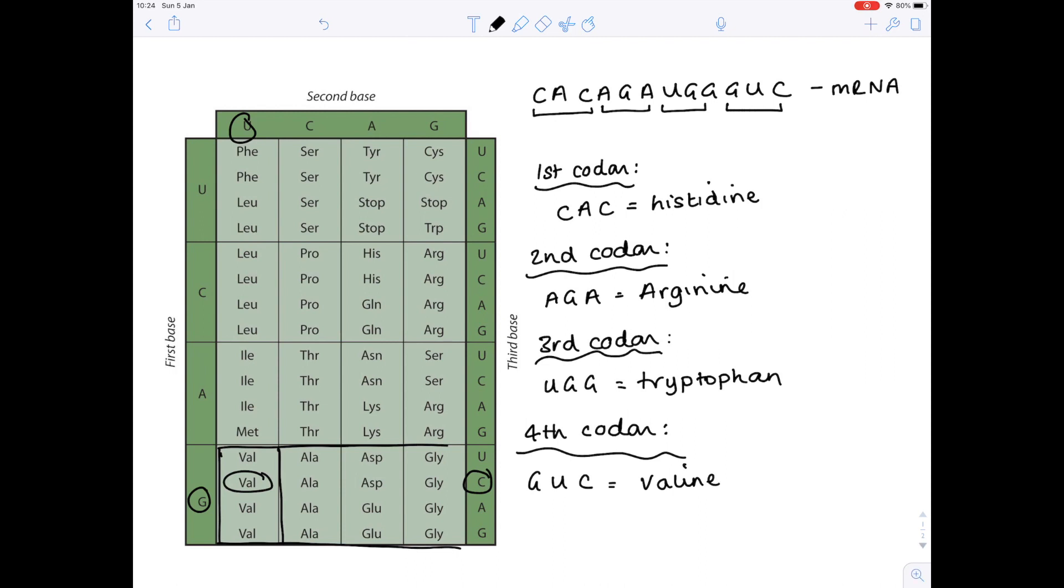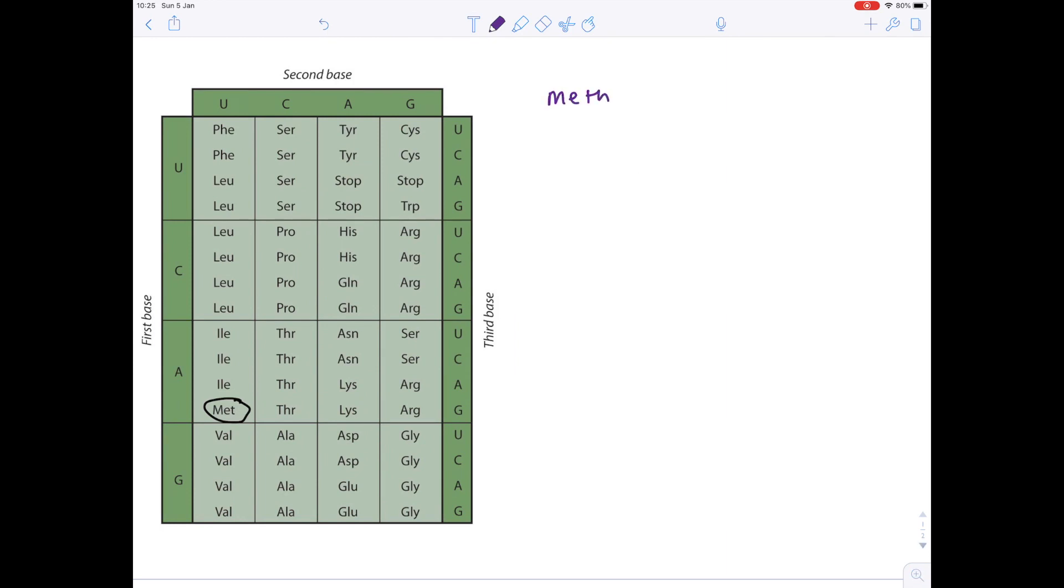So I hope you can see that this is a fairly straightforward way of working out which amino acids are generated from particular codons. Remember that you can also use the table the other way around, so you can use it to find codons which code for a particular amino acid. So for example, methionine, which I've circled here. Now what's interesting about methionine is that it is a start codon. And what that really means is that every single amino acid therefore starts with methionine.